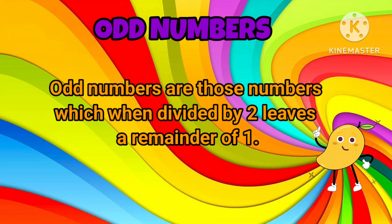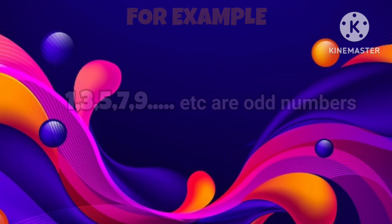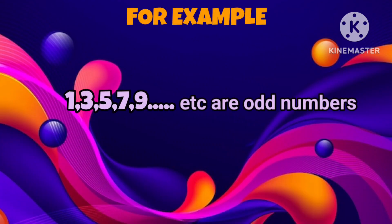Odd numbers are those numbers which when divided by 2 leaves a remainder of 1. For example, 1, 3, 5, 7, 9, etc. are odd numbers.